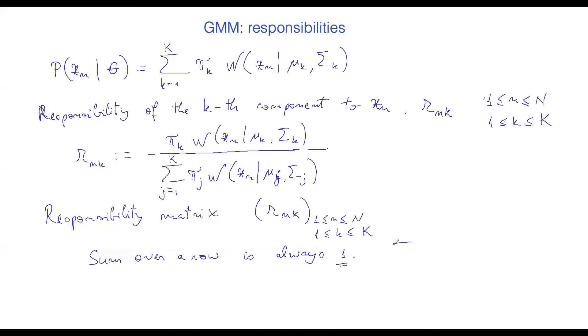So in other words, sum of rnk, sum over k is always going to be one. And also obviously these numbers, they are all greater than or equal to zero.